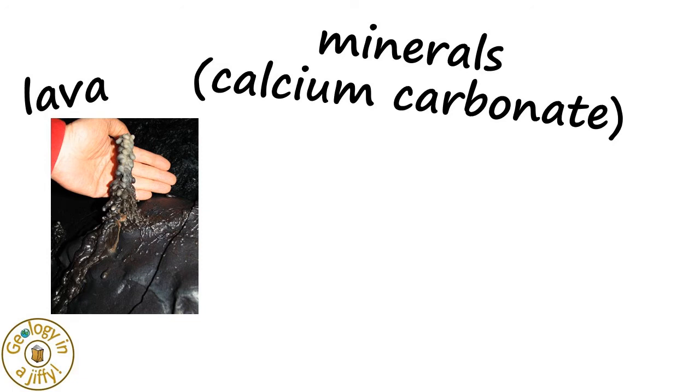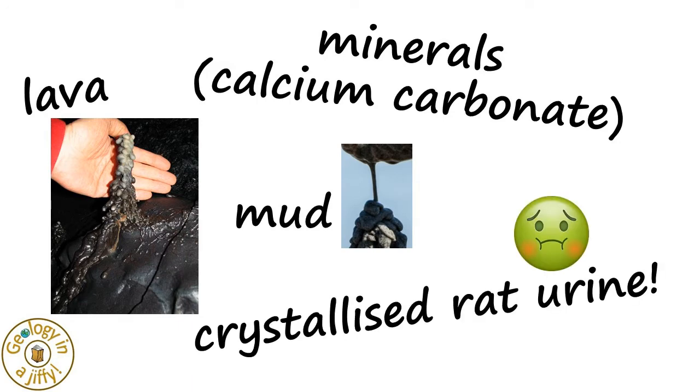Stalagmites can also form below lava stalactites, where lava drips down to the floor from the roof of a lava tube. Dripping mud and even the chemicals found in dripping rat urine can also form stalagmites.